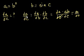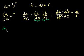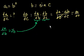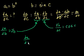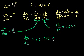So the chain rule tells us: the change of a with respect to c equals the change of a with respect to b, times the change of b with respect to c. These are easy to calculate. The derivative of a with respect to b is 2b. And the derivative of b with respect to c — since b equals sine of c — that's cosine of c.